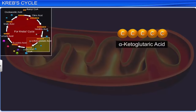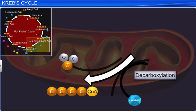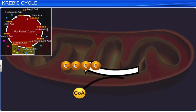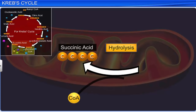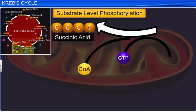Alpha-ketoglutaric acid undergoes oxidative decarboxylation using coenzyme A to form succinyl coenzyme A, along with the reduction of NAD+ to NADH+ H+. The succinyl coenzyme A formed is hydrolyzed to succinic acid with the release of coenzyme A. This reaction also results in the production of guanosine triphosphate or GTP, a high energy molecule, by substrate-level phosphorylation. The GTP thus formed is coupled with the synthesis of ATP from ADP.